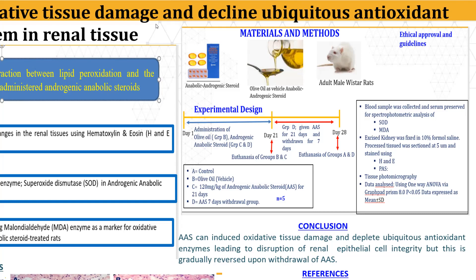The animals were divided into the following study groups: Group A — control; Group B — olive oil vehicle; Group C — 1 to 18 milligrams per kilogram of anabolic androgenic steroids for 21 days; and Group D — a 7-day withdrawal group. At the end of the study, blood samples were collected and serum preserved for spectrophotometric analysis of superoxide dismutase and MDA activity using a commercial kit.